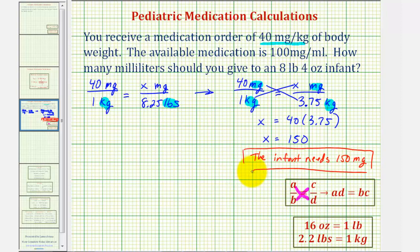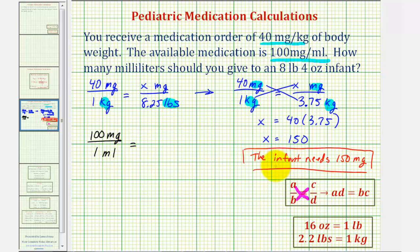And now we can use this information to determine the number of milliliters the infant needs. The medication comes in 100 milligrams per milliliter, so this will be one of the rates for our last proportion. We'll have 100 milligrams to 1 milliliter must equal the rate of 150 milligrams to an unknown number of milliliters.